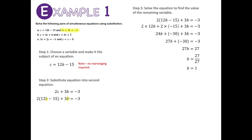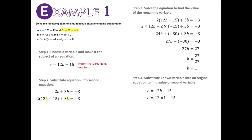So in the original equations, b equals 1. Now I can substitute that b value into one of the original equations to find c. Substituting into c equals 12b minus 15: c equals 12 times 1 minus 15, so c equals negative 3. Now I've got a solution for both variables, I can write my answer: b equals 1, c equals negative 3. That's an example of how we can use substitution to solve a set of simultaneous equations.